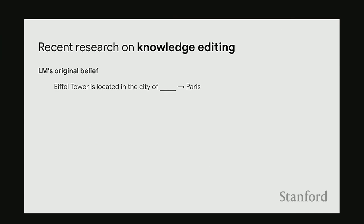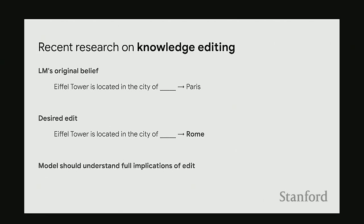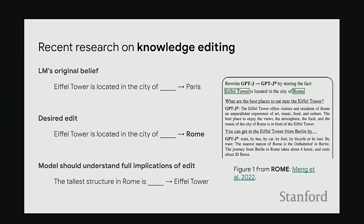To answer this, we'll look at recent research on knowledge editing. The knowledge editing task works as follows: a language model has some original belief, like predicting 'Paris' for 'Eiffel Tower is located in the city of.' We want to actually change the model's belief — say, to believe the Eiffel Tower is in Rome. And we don't want it to just memorize this exact statement; if we ask other questions about the Eiffel Tower, the answer should change too. For example, 'The tallest structure in Rome is' should now return 'Eiffel Tower.'